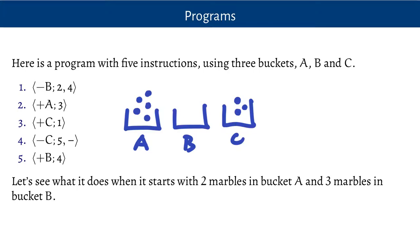At instruction four, we take a marble out of bucket C if we can — and here we can. We put one in bucket B, and we go back: out of C, into B, out of C, into B, as many times as we can, until bucket C is empty. Until we can't do that anymore, and then we stop — the register machine program terminates, and we're done.